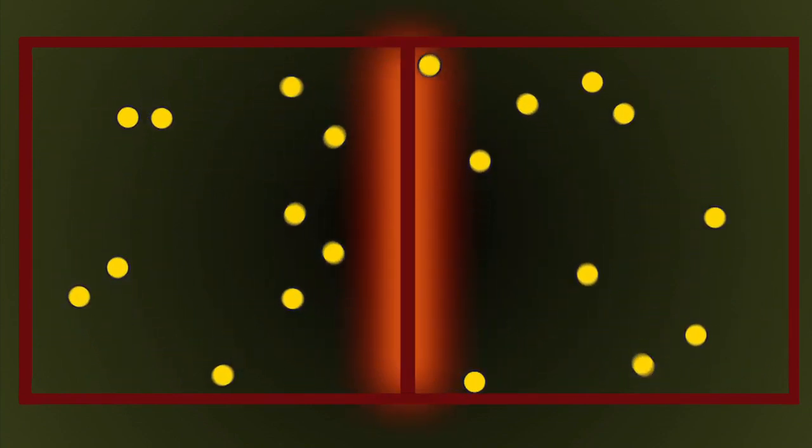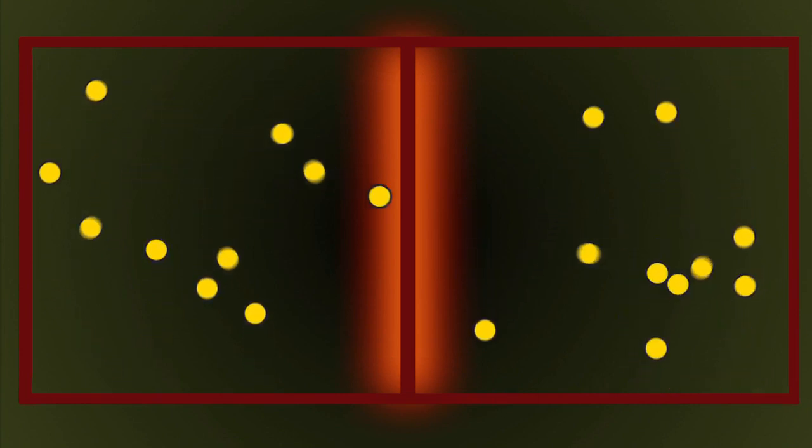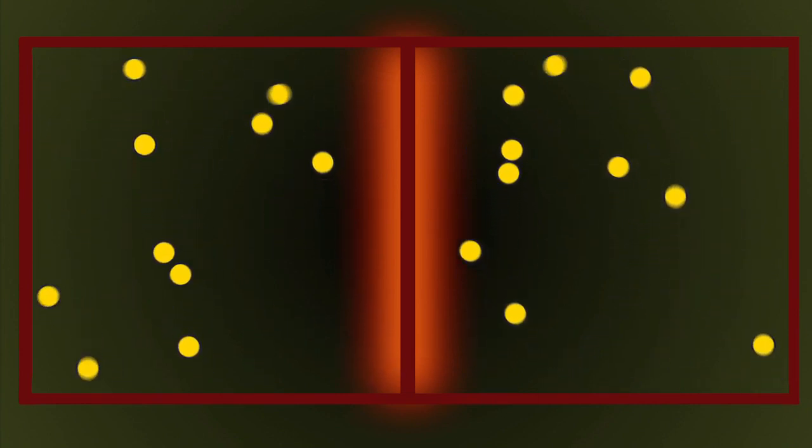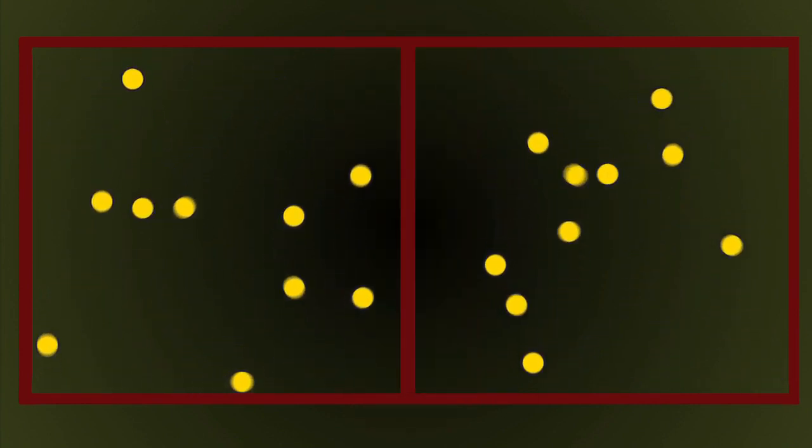Instead, we consider omega, the number of microstates that correspond to a system with macro parameters E, N, and V. Now, let's consider an isolated system comprised of two boxes of non-interacting particles. The wall separating the two boxes allows the transfer of energy but does not allow particles to cross it. What changes in macrostate parameters do we observe in our system?